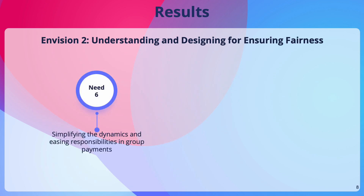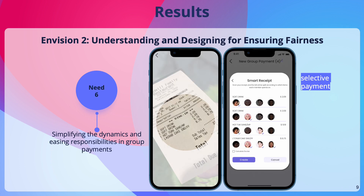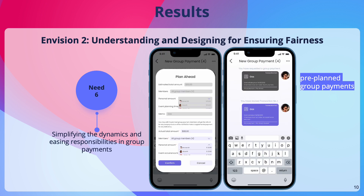The second envision is ensuring fairness. For instance, co-designers proposed a selective payment feature where people can easily split bills by scanning their receipts and only selecting the items they need to pay. They also suggested pre-planned group payments — instead of one person paying upfront, a plan-ahead feature was proposed to involve group members depositing money into a collective account.